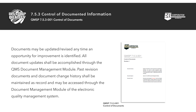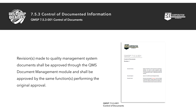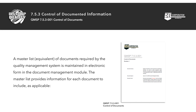Past revision documents and document change history shall be maintained as record and may be accessed through the document management module of QISS. Revisions made to quality management system documents shall be approved through the QMS document management module and shall be approved by the same functions performing the original approval.